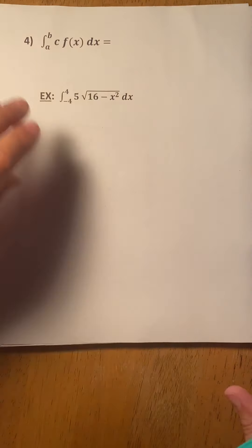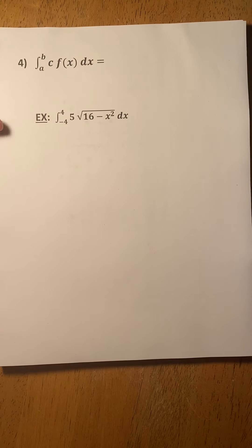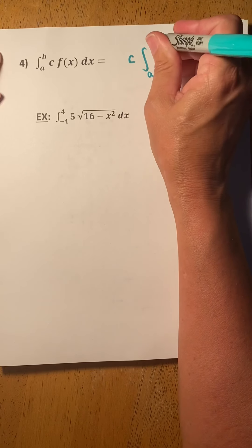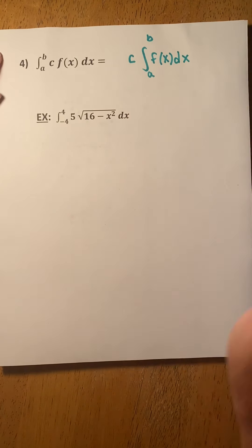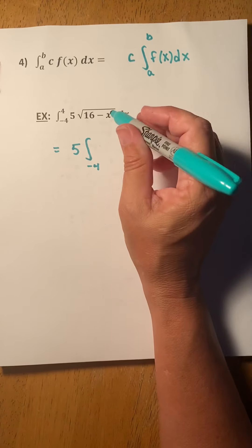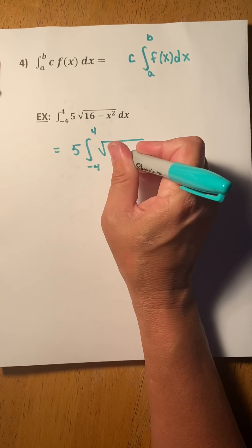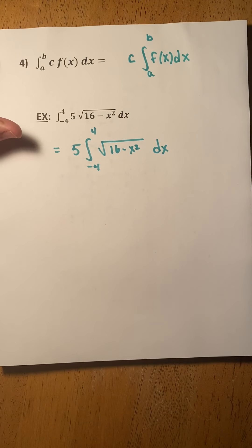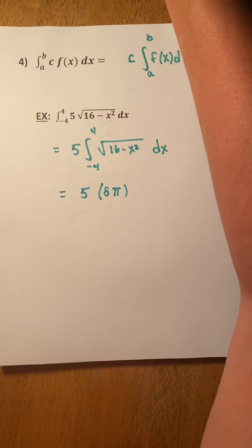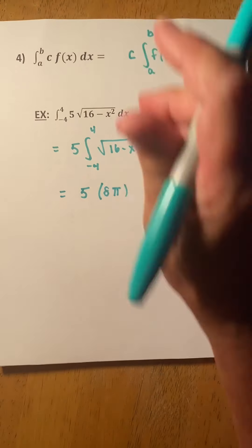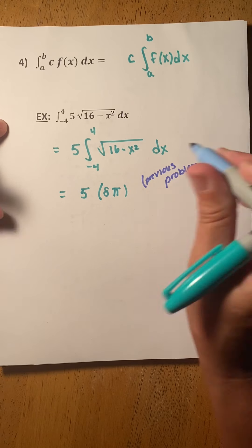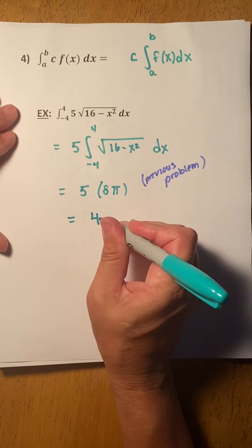Continuing with our properties: if you have a constant inside an integrand, you can pull the constant out, just like in derivatives. We can pull it out only if it's a factor, not if it's part of a sum or difference. For example, the integral of 5 times the square root of 16 minus x squared — we can pull the 5 out and just integrate the square root of 16 minus x squared, which we did previously and got 8 pi. So the result would be 5 times 8 pi, which is 40 pi.